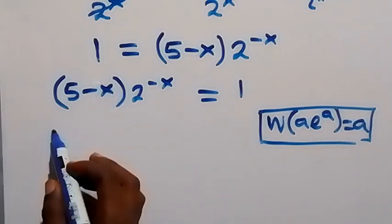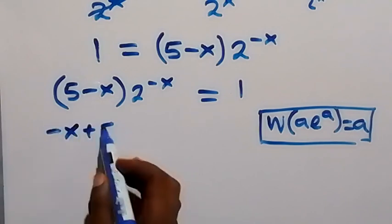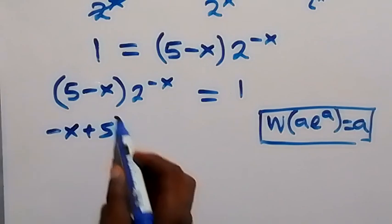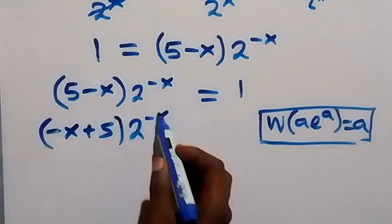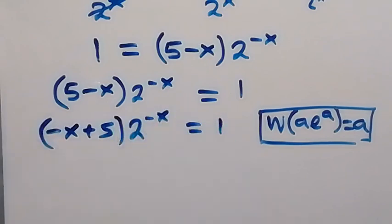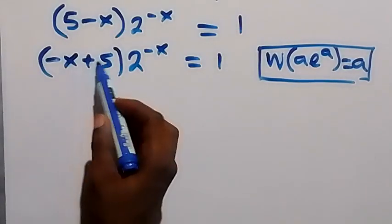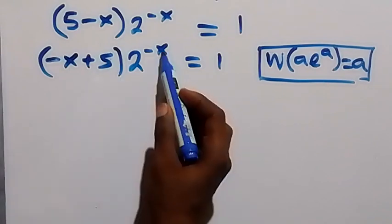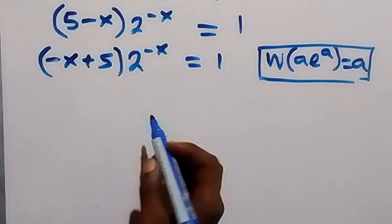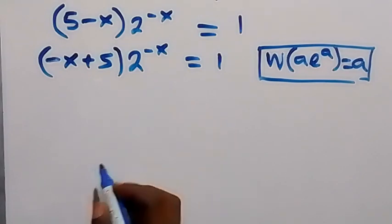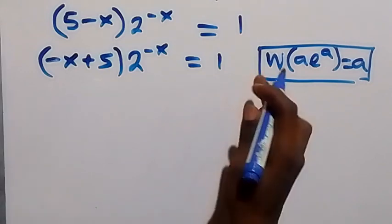We rearrange this and write minus x plus 5, which is the same as 5 minus x, times 2 raised to power minus x equals to 1. From here, we have minus x plus 5, and let's make the exponent also minus x plus 5. To do this, we multiply both sides by 2 raised to power 5.